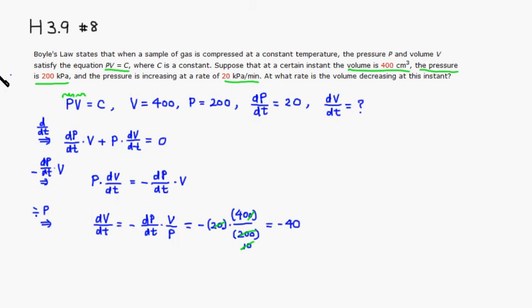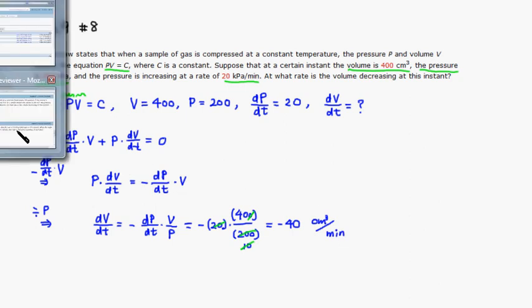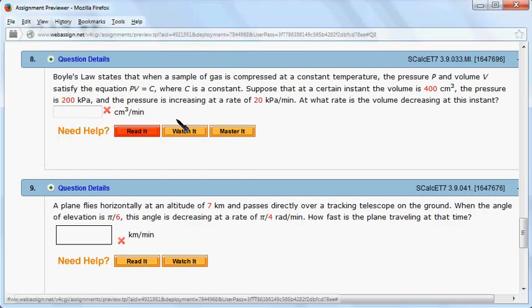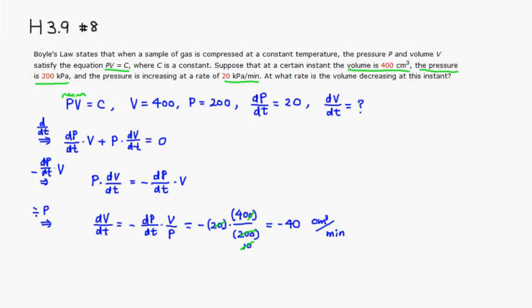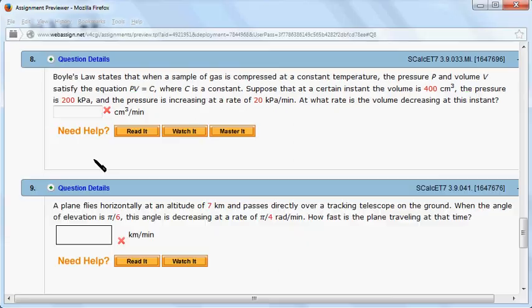So let's type it in. The unit would be, it's a volume, so cubic centimeters per minute. So it says decreasing, so that will take care of the negative sign. And that was 40, so it's going to be 40.